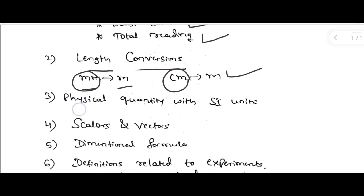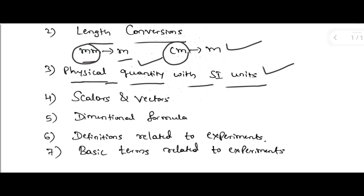The next type is physical quantity with SI units. In any experiment there are physical quantities involved. For example, in experiments using a spherometer, vernier calipers, or screw gauge, length is the main physical quantity being measured. In such cases, they may ask questions about the physical quantity, its dimension formula, and its SI units.